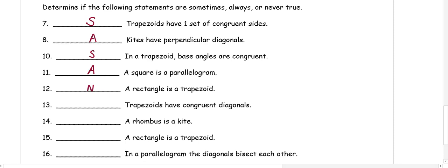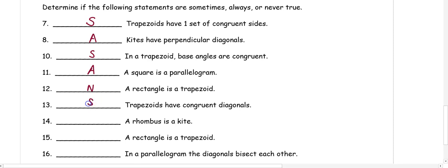Trapezoids have congruent diagonals — this sometimes happens, only in an isosceles trapezoid; in a regular trapezoid the only property is that consecutive angles are supplementary. A rhombus is a kite — this is never true because they don't share all properties in common. A rectangle is a trapezoid — never true, as stated before. A parallelogram's diagonals bisect each other — that's a property of parallelograms, so this is always true.